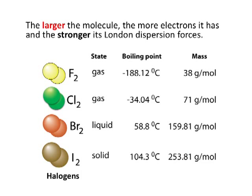One critical thing to remember is that the larger the molecule, the more electrons it's going to have. Therefore, not only will there be more instantaneous dipoles forming, but the instantaneous dipoles can actually be stronger the more electrons you have. So the larger the molecule, the stronger the London dispersion forces will be between those molecules.